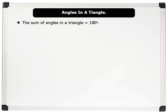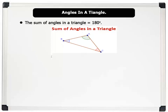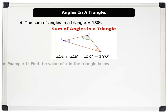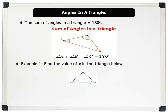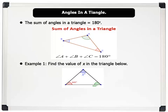Now let us see angles in triangles. The sum of angles in a triangle equals 180 degrees. For example, in the triangle below, angle A plus angle B plus angle C equals 180 degrees. Let us solve a problem. Example one: find the value of x in the triangle below.